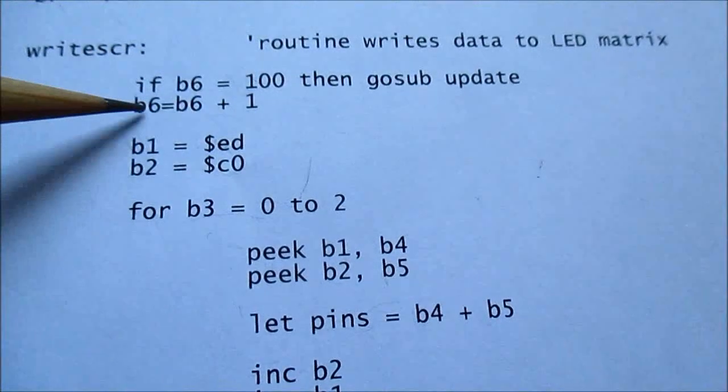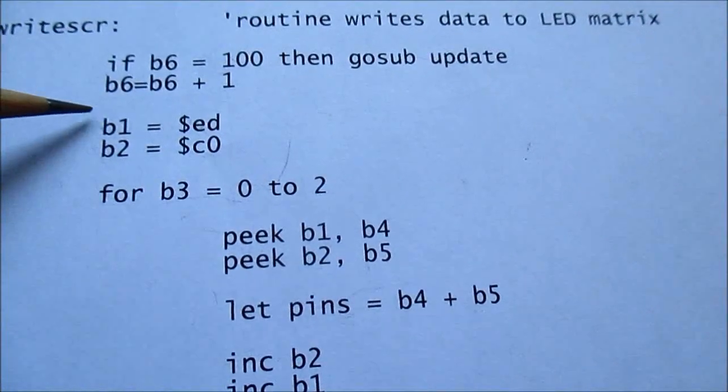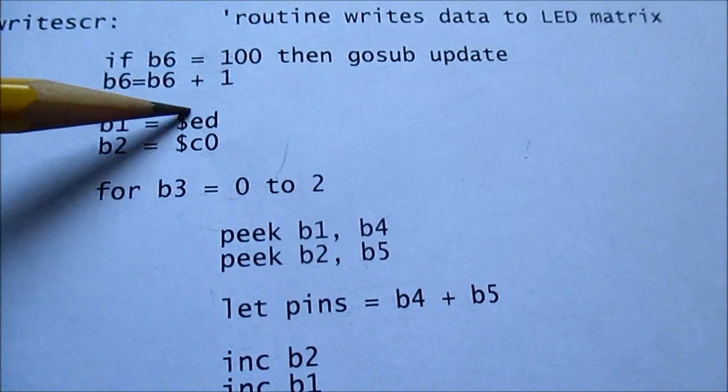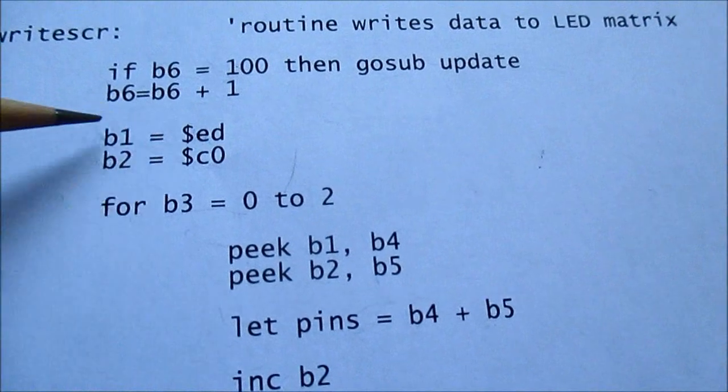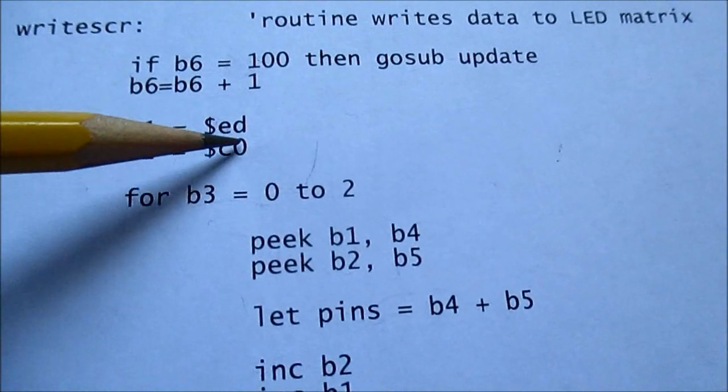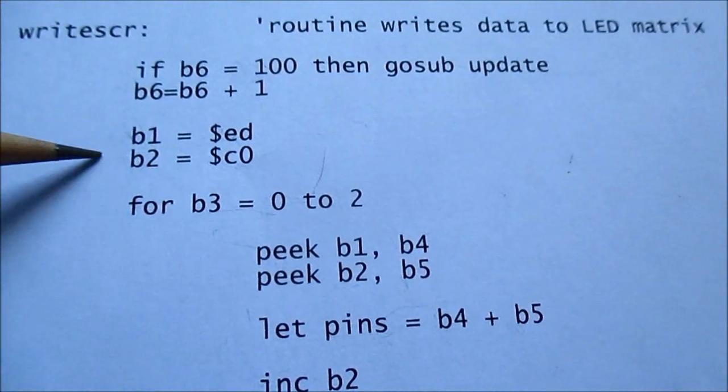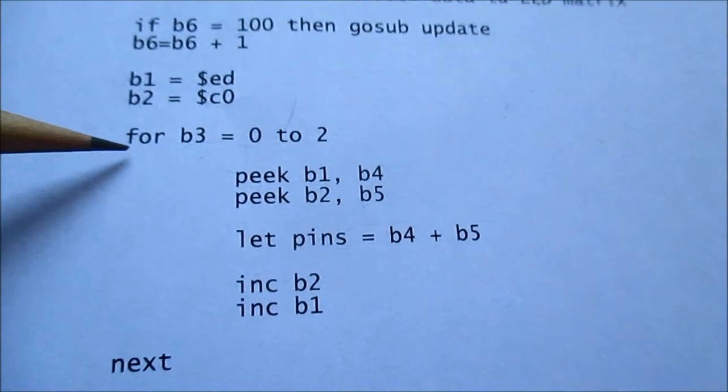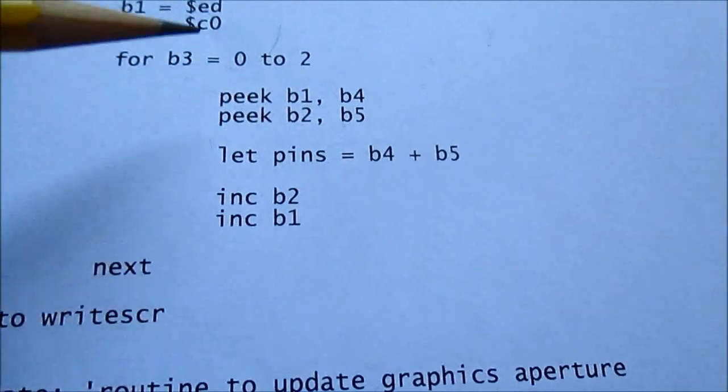And if it doesn't equal 100, it's going to increment that by 1. First, it puts this address, not the contents, but this memory address into this variable. And this column, this is the column pattern starting address, puts into that variable. And this just is a for next statement, for loops three times.